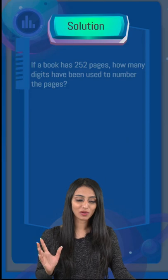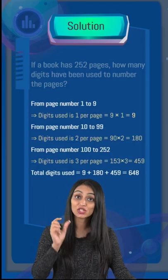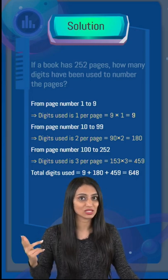It is very simple, all we need to do is, if we start from page number 1 to 9, digit used is 1 per page, so that's going to be 9 times 1 which is 9.